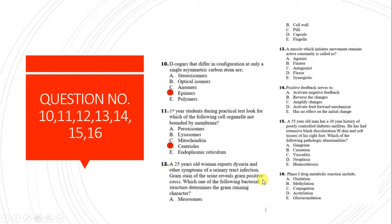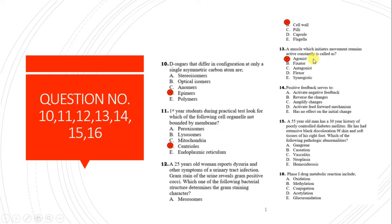Question 12: A 35-year-old woman with urinary tract infection symptoms. Gram stain of urine reveals gram-positive cocci. Question 13: The muscle that initiates movement and remains active constantly is called the agonist. The agonist is the correct answer because it initiates movement and remains active during the entire exercise.